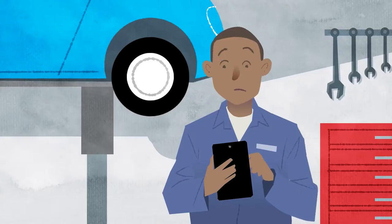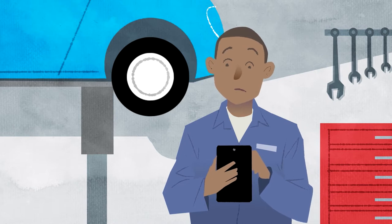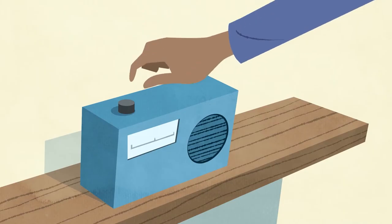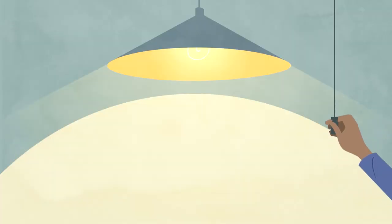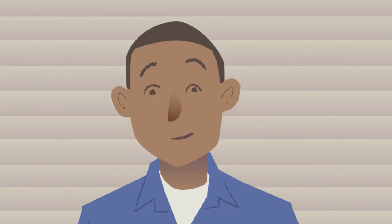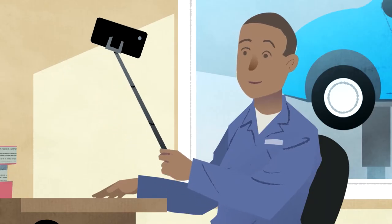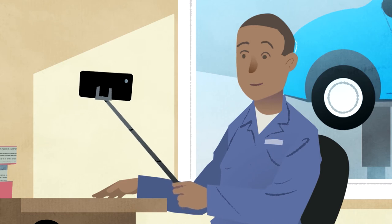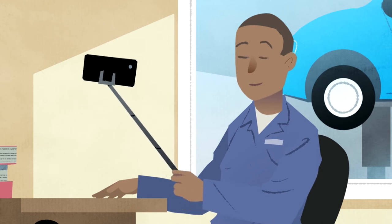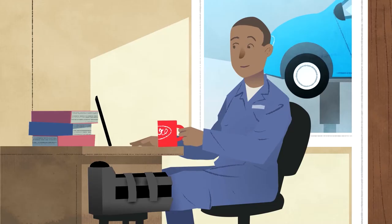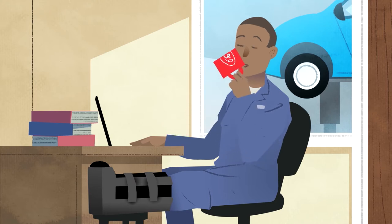Wherever you choose to make your video call, you'll need to make sure it is private, quiet and well lit. But avoid a bright light or sunshine behind you, just as if you're taking a photo. If you're using a smartphone or tablet, try to keep it as steady as possible — prop it up and leave your hands free for something more important.